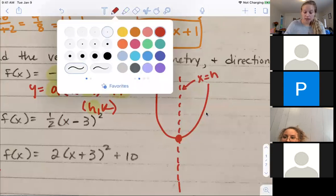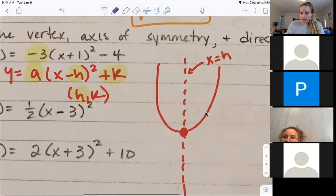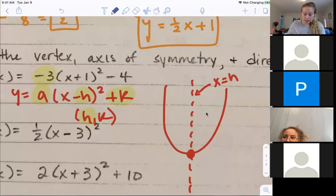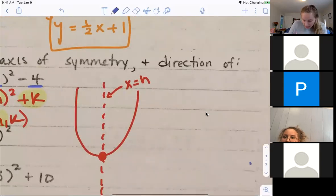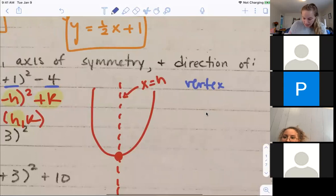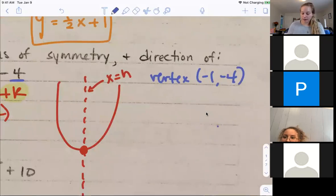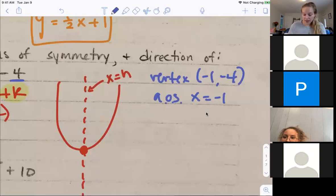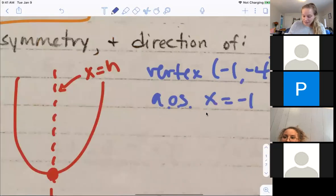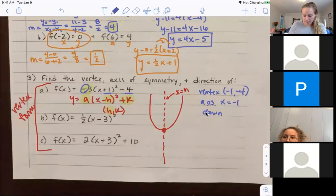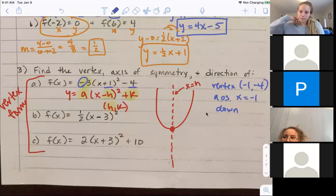I'm now going to identify my vertex and my axis of symmetry and my direction on this problem. There's my h and there's my k. So my vertex is opposite of what's in the parentheses. My h becomes a negative one, and my k stays at negative four. So my vertex is negative one, negative four. My axis of symmetry is the x value of the vertex, so x equals negative one. And it has a negative in front, so it's going down.